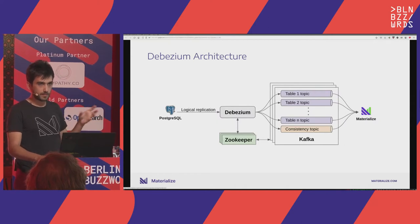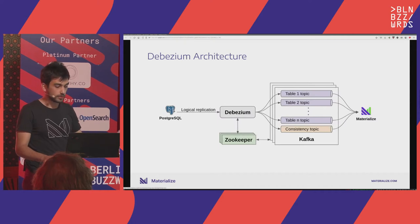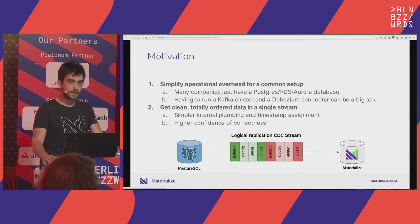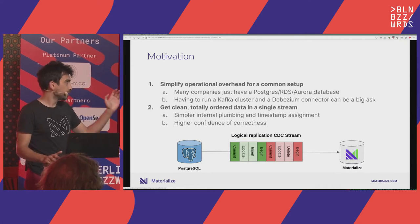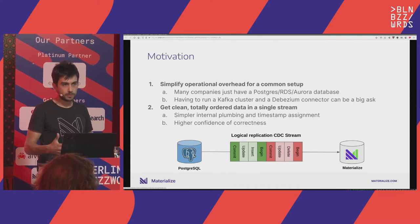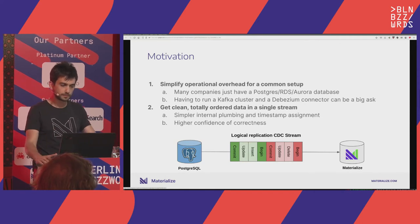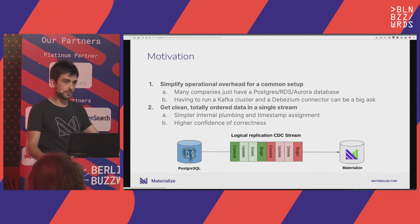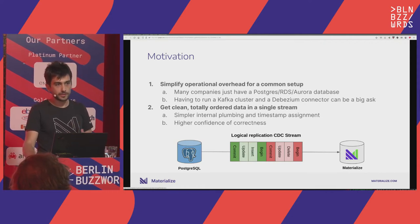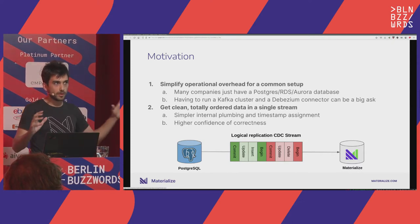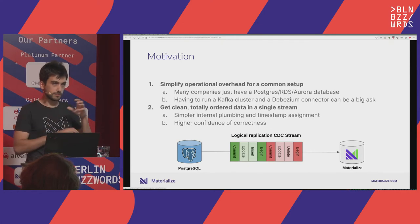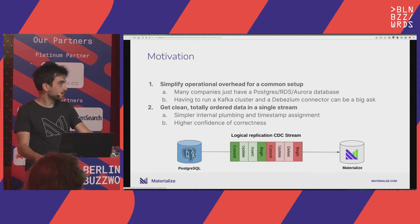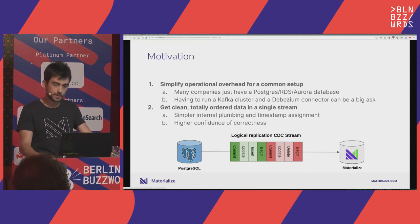I wanted to show this architecture to motivate why we went down the path of direct Postgres replication. The reasoning is twofold. First, from the user perspective: many companies have a simple Postgres installation and don't have the know-how or need for a Kafka cluster with Zookeeper. It's much simpler operationally to directly connect their database to Materialize. Second, from the implementation side: reconstructing the exact history with high correctness guarantees — deduplication, recombining data with the consistency topic — is a lot simpler when consuming a single well-ordered stream.